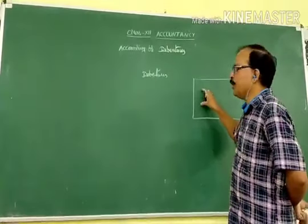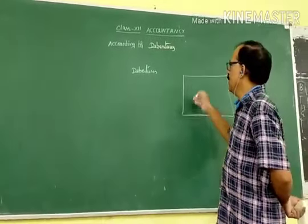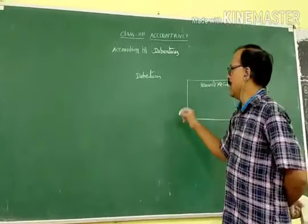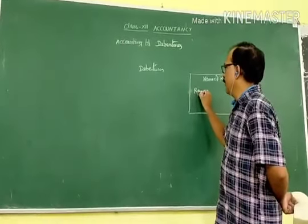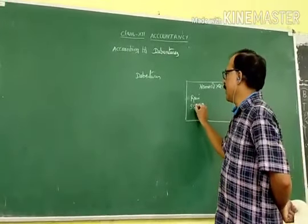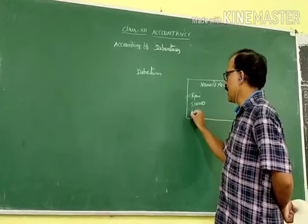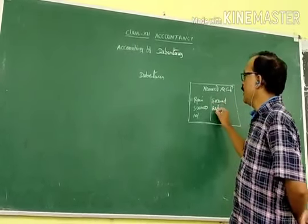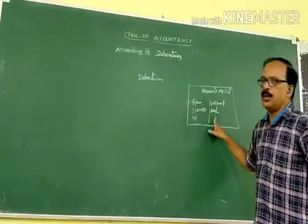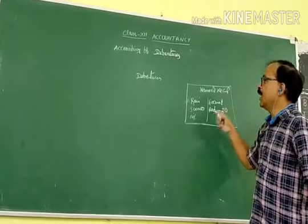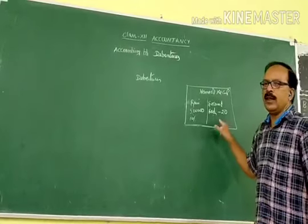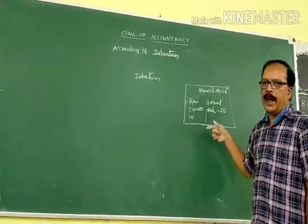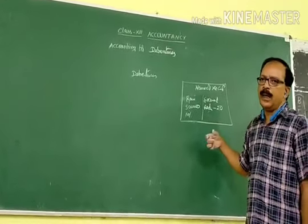What are the contents included in a debenture? Generally, on a debenture, the name of the company is written, from whom they are getting the money — suppose from Ravi — and how much amount, suppose 5 lakhs. Then, what is the rate of interest, suppose 10%. Whether the debentures are secured or not. What about the redemption period — that means, after how many years the company wants to repay the amount to the debenture holder, suppose 20 years. This information is clearly mentioned on this separate document, which is called a debenture — an instrument acknowledging that the company had taken a loan from the public.